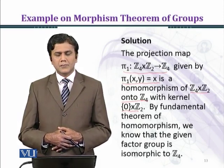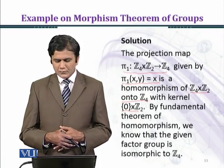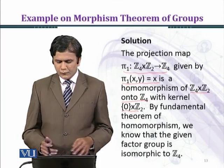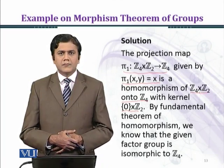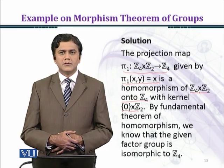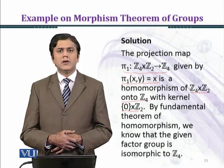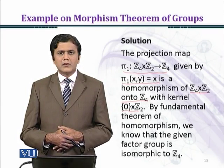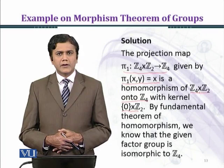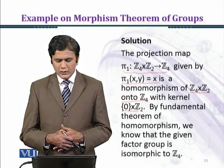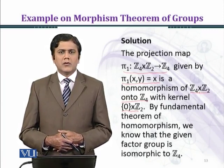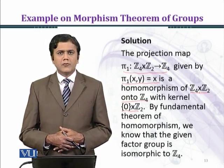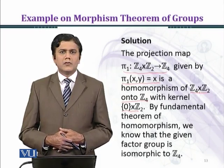The elements of Z4 cross Z2 are: (0,0), (1,0), (2,0), (3,0), (0,1), (1,1), (2,1), (3,1) — total 8 elements. The kernel 0 cross Z2 has 2 elements: (0,0) and (0,1). When you take cosets with the kernel, there are 4 cosets in the quotient group Z4 cross Z2 over 0 cross Z2, and using the fundamental theorem of homomorphism, Z4 cross Z2 over 0 cross Z2 is isomorphic to Z4.